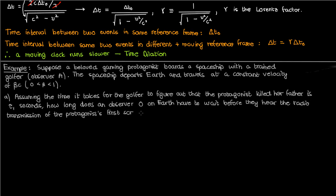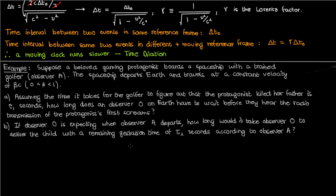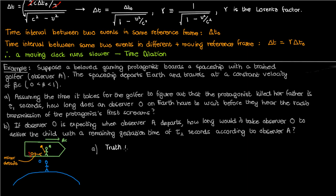Part B then switches things up: if observer O is expecting when observer A departs, how long would it take observer O to deliver, given a remaining gestation time of tau_2 seconds — according to observer A? Drawing a figure: observer O is on Earth (stationary relative to itself) and observer A travels at beta*c relative to Earth. The time tau_1 for observer A to realize the truth is our proper time delta_t0. Calculating delta_t_scream in Earth's frame is straightforward: plug into the time dilation formula to get delta_t_scream = tau_1 / sqrt(1 - beta²).